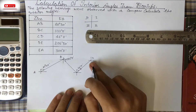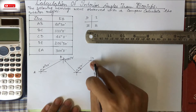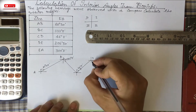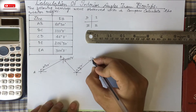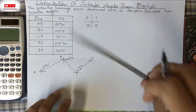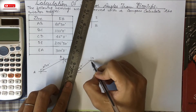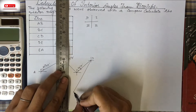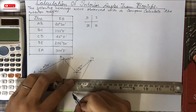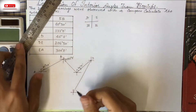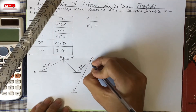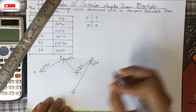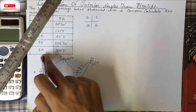From D to E the bearing is 205°30', which is in the third quadrant — past 180°. So we draw the line beyond the 180° reference. This gives us point E.